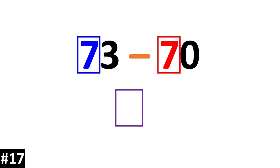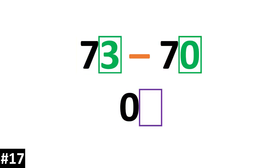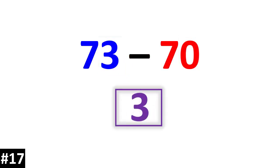73 minus 70. 7 10s minus 7 10s is 0 10s. We look to the ones: 3 minus 0 is 3. So our answer is 3.